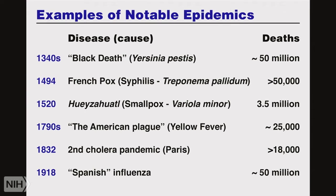Going back to the 14th century with the well-recognized bubonic or black plague — Yersinia pestis — through the plagues shown on this slide, one in the relatively modern era is the so-called Spanish influenza, which killed between 50 and 100 million people. In population relative to today, that would be equivalent to several hundreds of millions of people if we had the 1918 influenza today. These are things that continue to transform history.